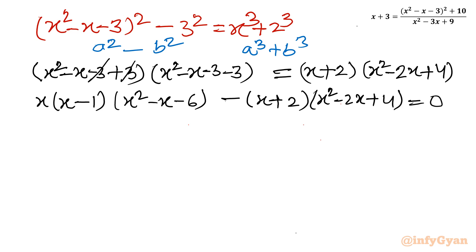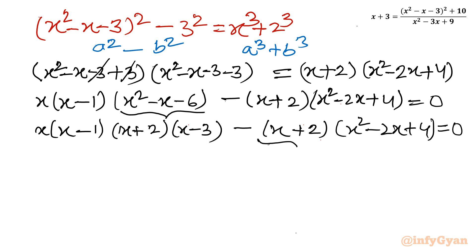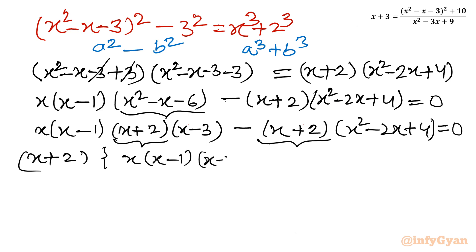Now I will factorize x² - x - 6. It can be written as (x + 2)(x - 3). So we have x(x - 1)(x + 2)(x - 3) minus (x + 2)(x² - 2x + 4) equals zero. x + 2 is clearly common, so taking it out gives: (x + 2)[x(x - 1)(x - 3) - (x² - 2x + 4)] = 0.